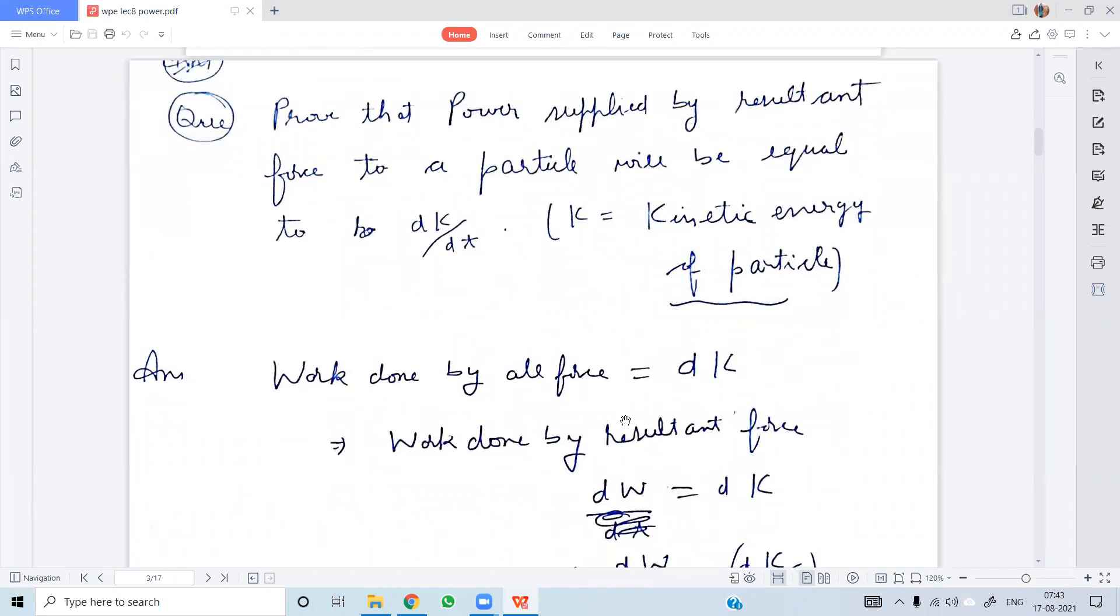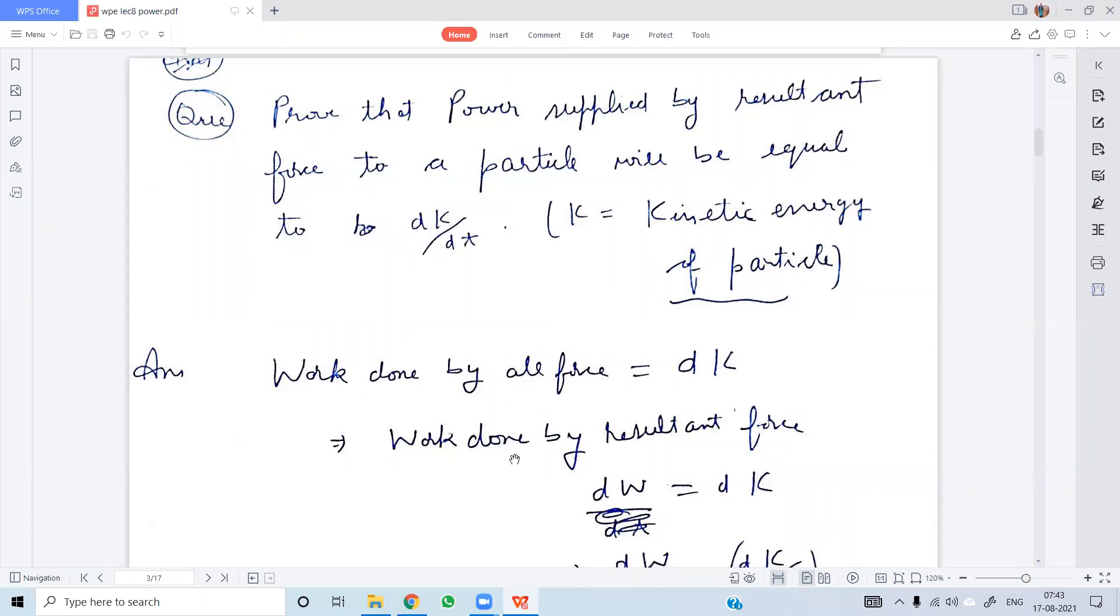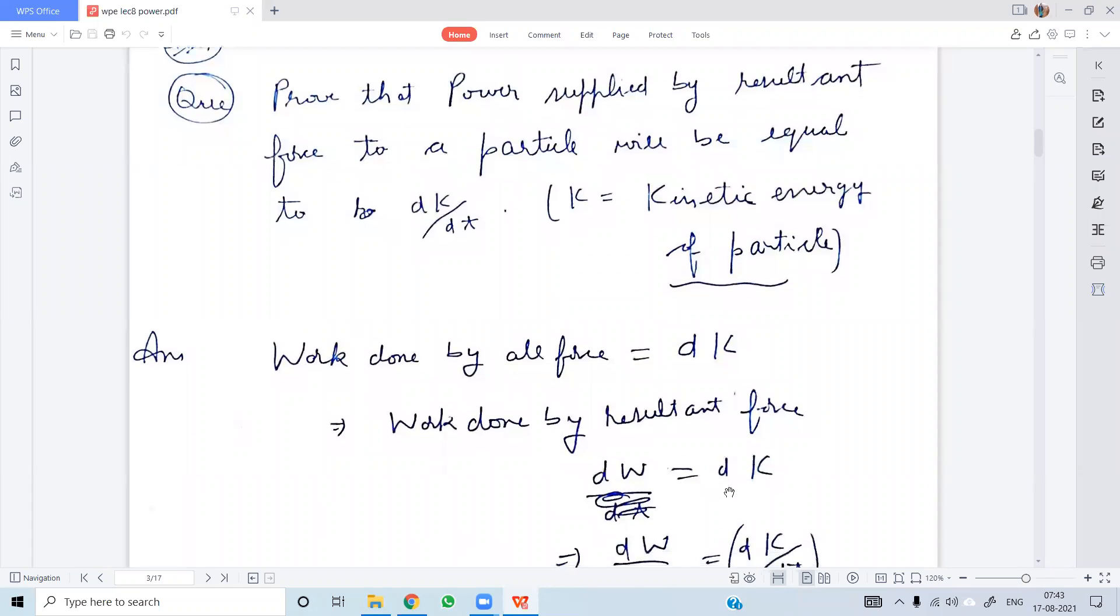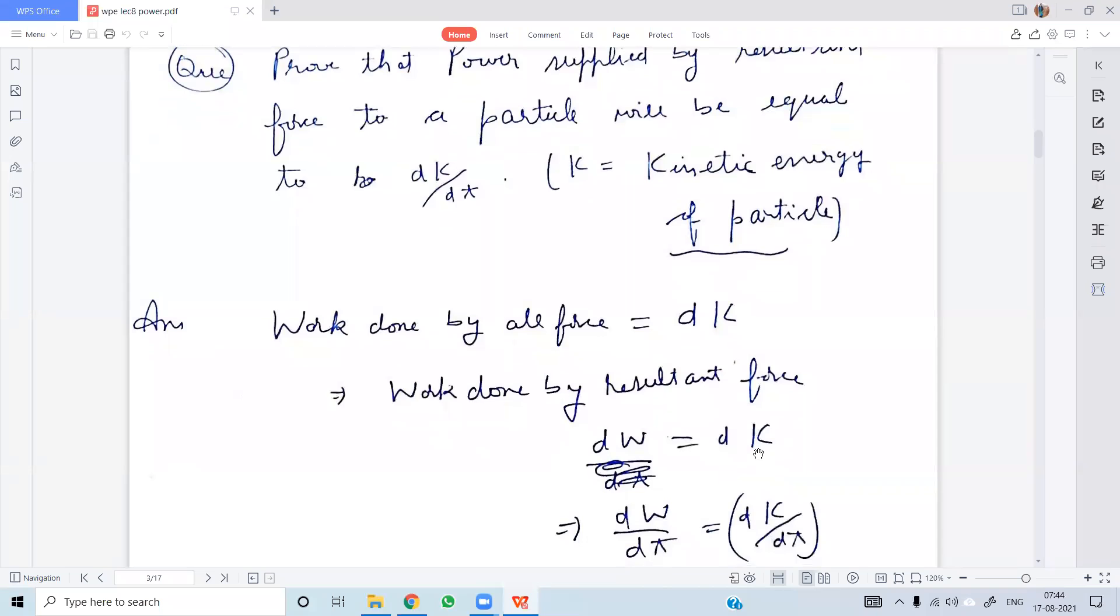Work done by resultant forces equals kinetic energy of the particle. Work done by resultant force: dW is equal to dK. Work done by resultant force dW is equal to change in kinetic energy.